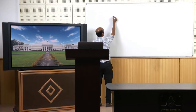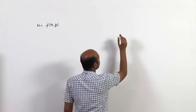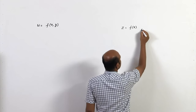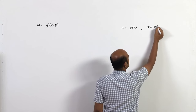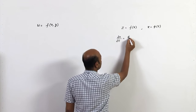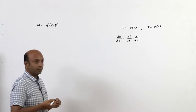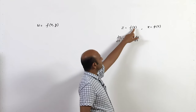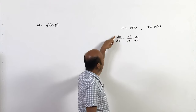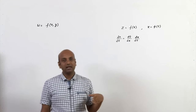Suppose w = f(x, y) is a function of two variables. First, consider a function of single variable: suppose z = f(x), and x is a function of t. If you find dz/dt, it is nothing but df/dx · dx/dt. This is the chain rule for a single variable function.